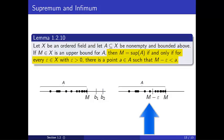The second picture shows the alternate characterization given in the lemma where any number less than M, represented by M minus epsilon, cannot be an upper bound for A. We'll explore this and more during lecture. I look forward to seeing you there.